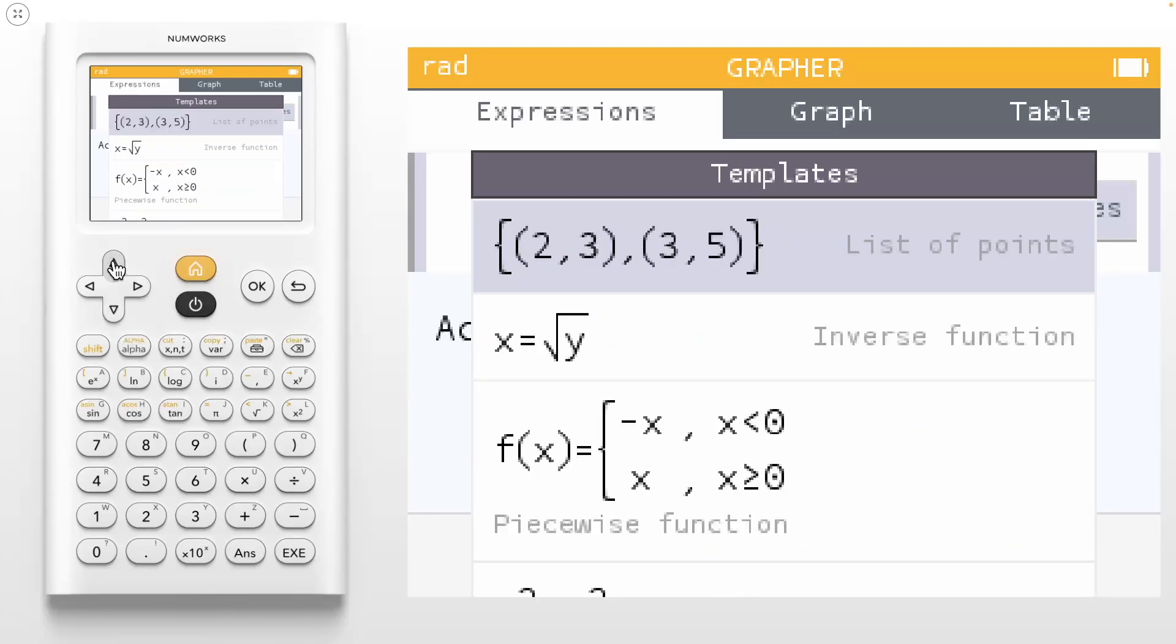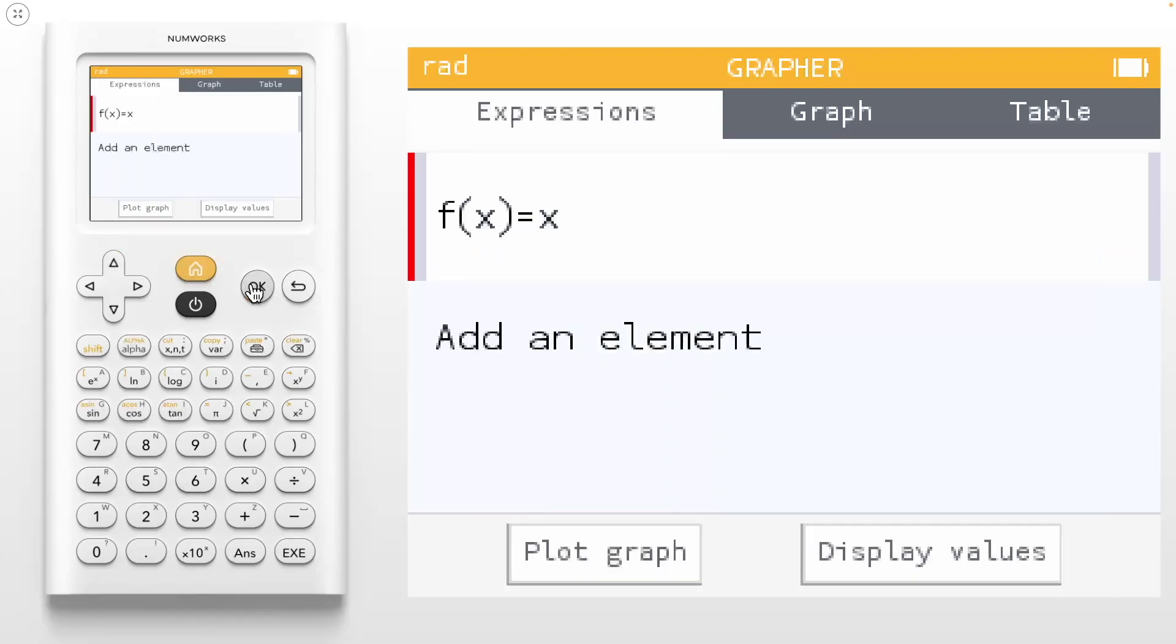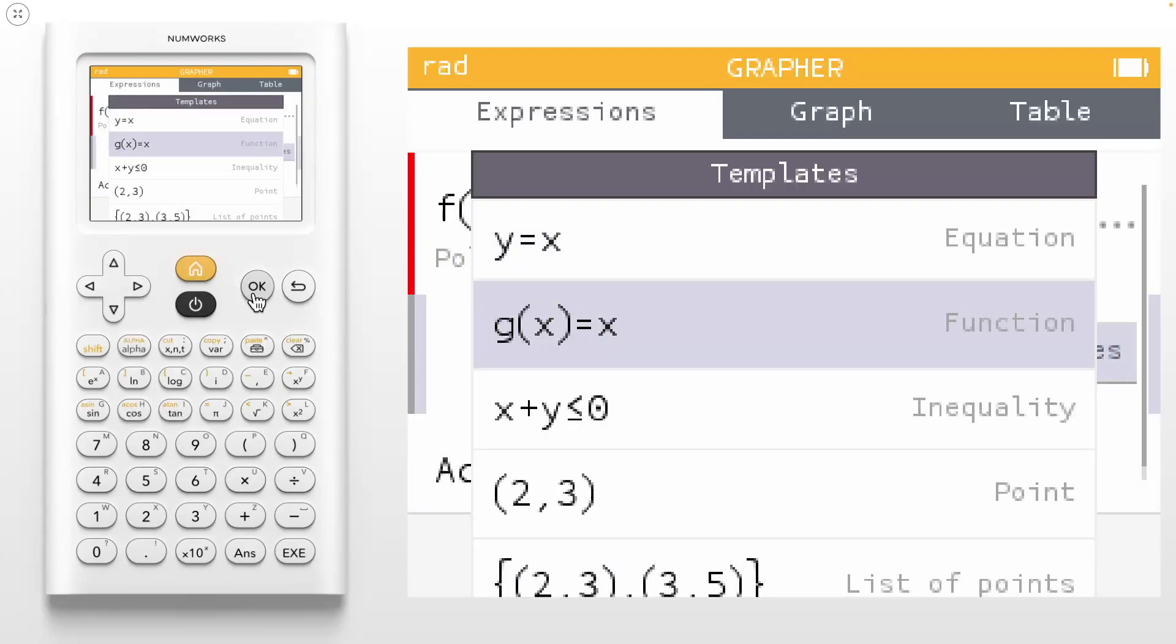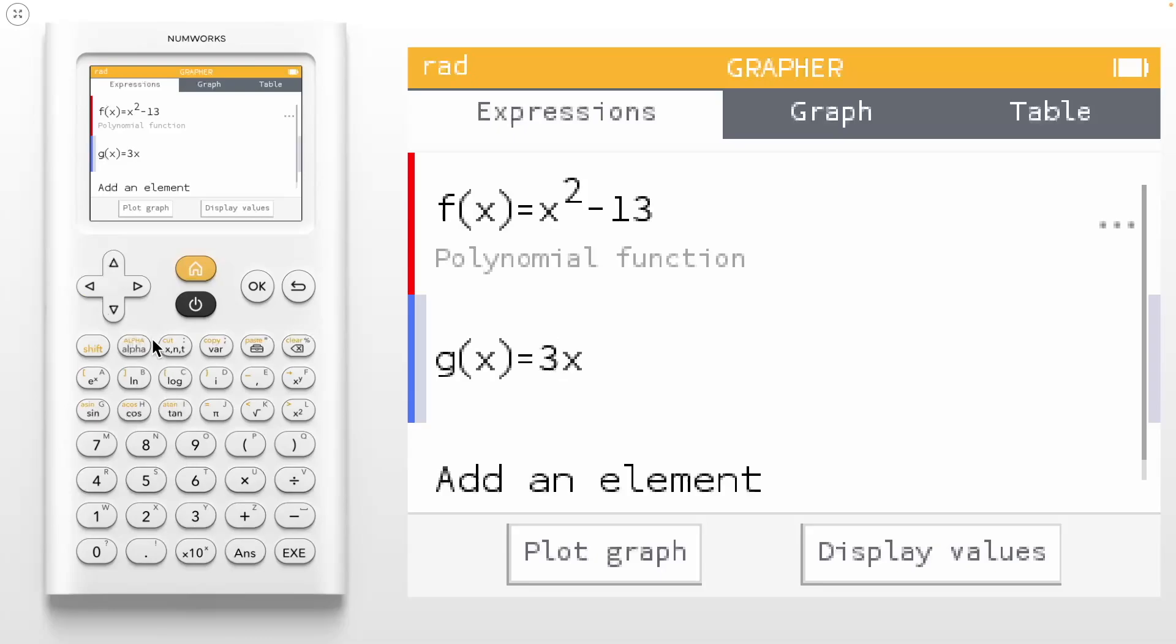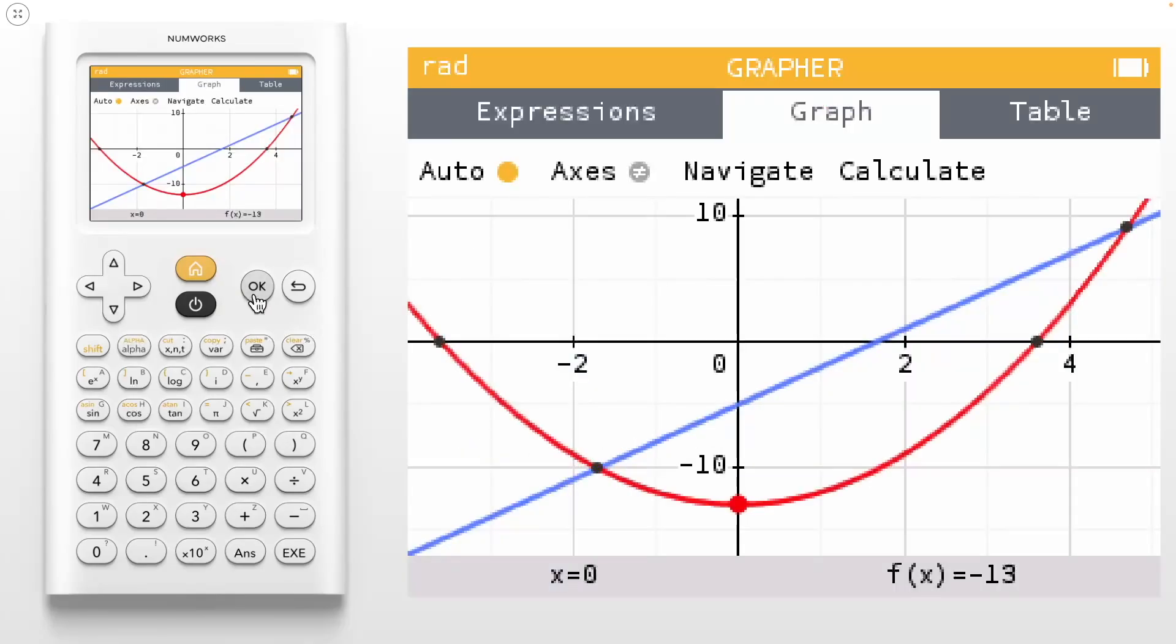To start, let's look at two functions. We'll graph the function f of x equals x squared minus 13 and g of x equals 3x minus 5. Notice when using the function template that the template has changed to g of x. To view the graph of these functions, navigate down to plot graph.